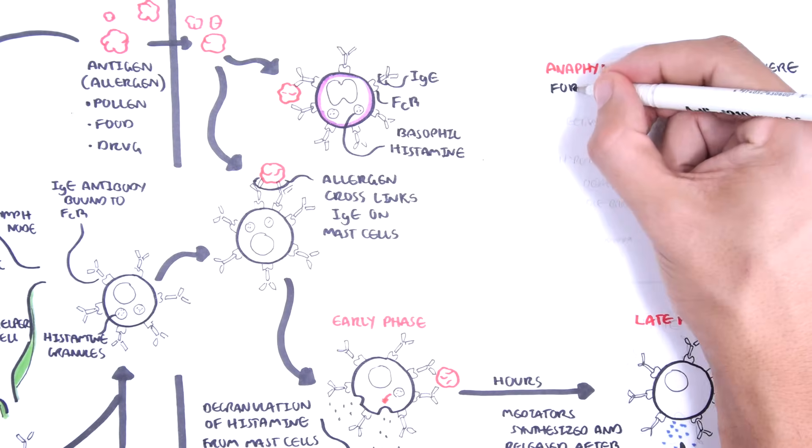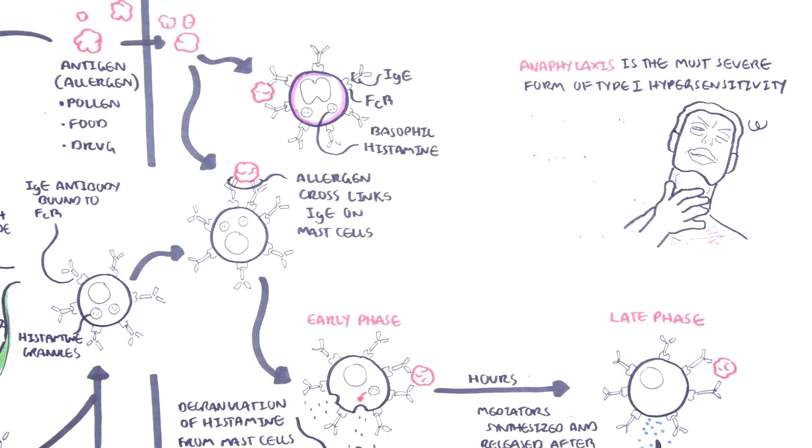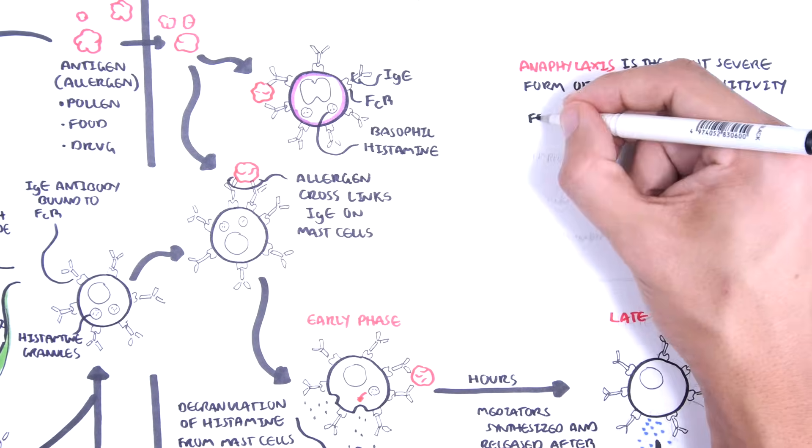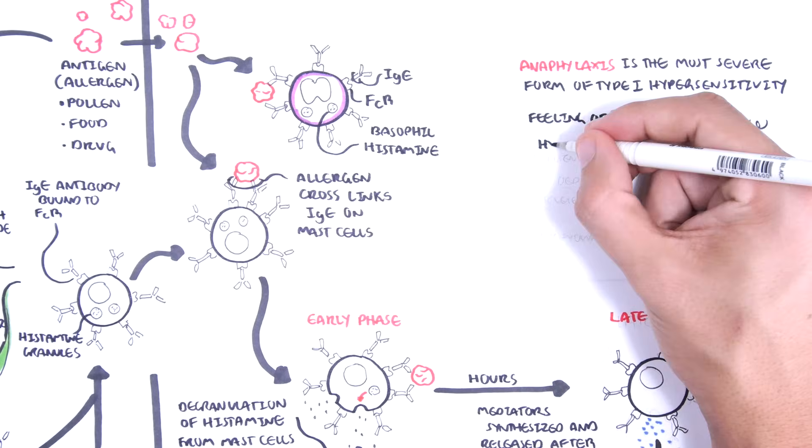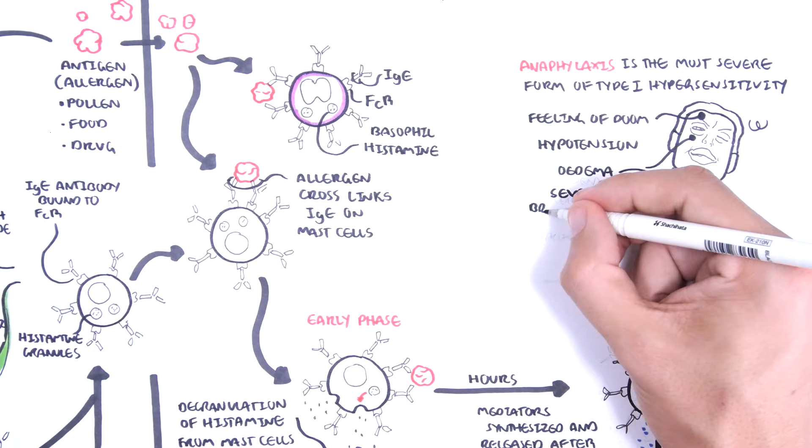Now, anaphylaxis is the most severe form of type 1 hypersensitivity. Here, people develop feeling of impending doom, hypotension, edema of the lips, neck, severe bronchoconstriction, they can't breathe...